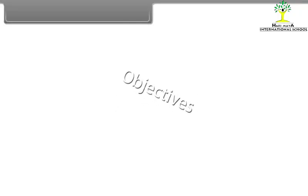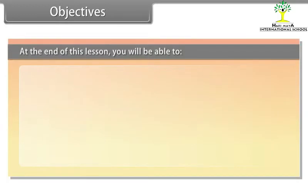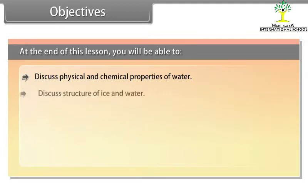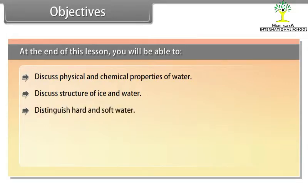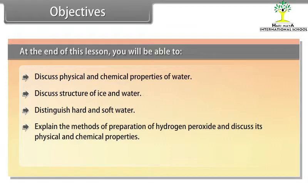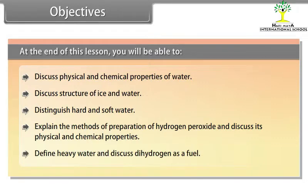Objectives. At the end of this lesson, you will be able to: discuss physical and chemical properties of water, discuss structure of ice and water, distinguish hard and soft water, explain the methods of preparation of hydrogen peroxide and discuss its physical and chemical properties, define heavy water and discuss dihydrogen as a fuel.